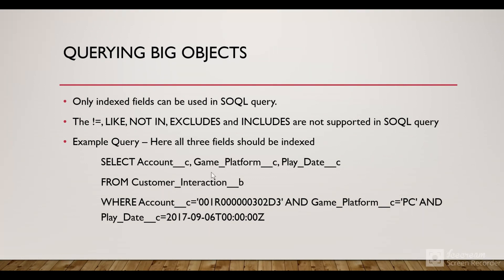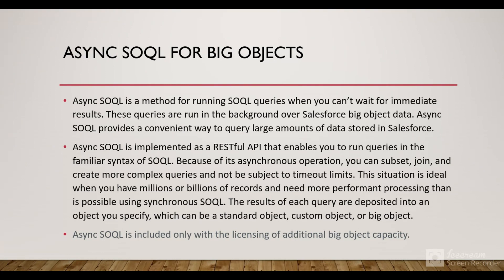We're looking at the Customer Interaction big object — you can see the prefix is '__b'. These are the indexed fields for that object, and we've provided conditions in the WHERE clause. We can also use Async SOQL for big objects. Async SOQL is a method for running SOQL queries when you don't need immediate results — the queries run in the background and return data after some time.